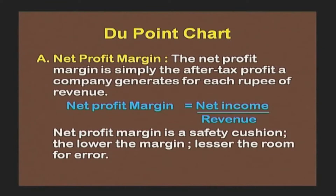The first component of the DuPont chart to ascertain return on equity is net profit margin. Net profit margin is simply the after-tax profit of a company generated for each rupee of revenue. We can compute it as: Net Profit Margin = Net Income / Revenue. The net income is the after-tax profit and revenue is the turnover.